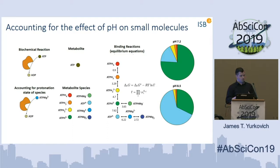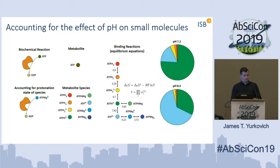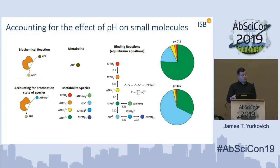Another very important constraint when computing phenotypic states is accounting for the effect of pH on small molecules. When we talk about metabolic networks, we think of metabolites simply as ATP, but in reality ATP exists as one of many different protonation states depending on the system. As the pH changes, the dominant species of ATP changes — it may be bound to magnesium or exist in a different charge state. Using the pH of the system, we can modulate which metabolite species are most dominant.